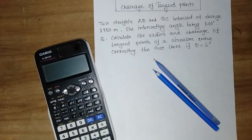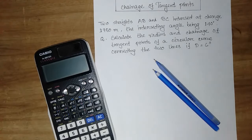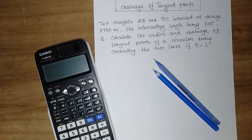Welcome to Engineering School. Today we will solve a problem about the topic of change of tangent points. The question is: two straights AB and BC intersect at chainage 1950 meters, the intersecting angle being 140 degrees. Calculate the radius and chainage of tangent points of a circular curve connecting the two lines if D is equal to 6 degrees.